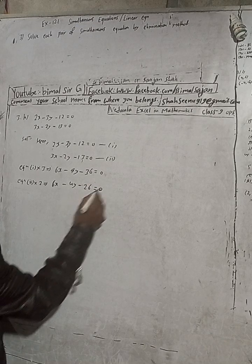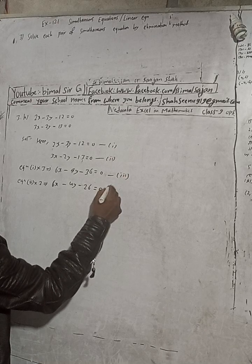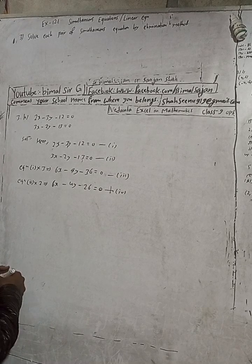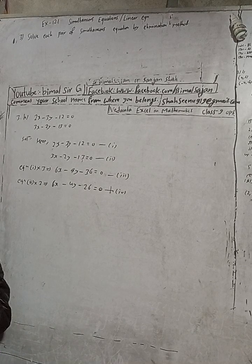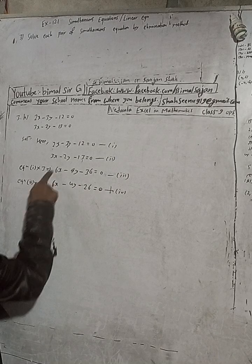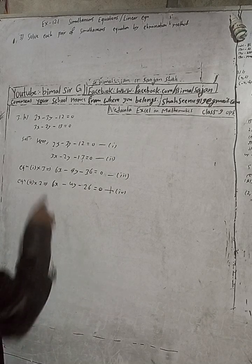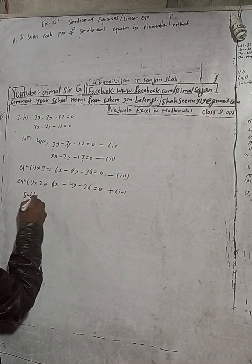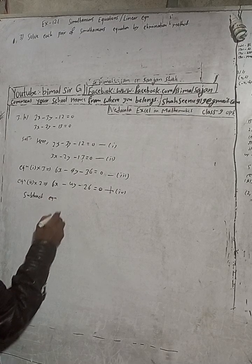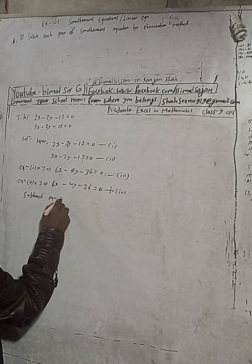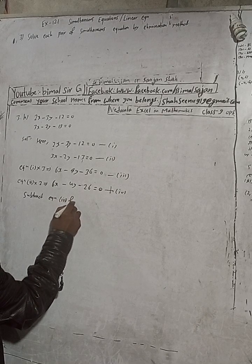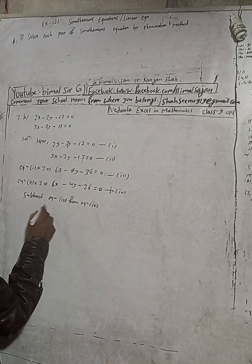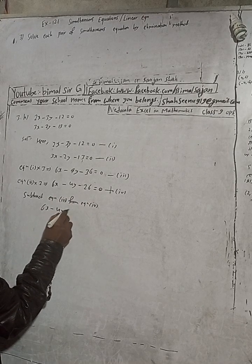This is our equation 3 and this is our equation 4. Now to eliminate x, we have to subtract — because both have the same sign, we subtract. We subtract equation 3 from equation 4.